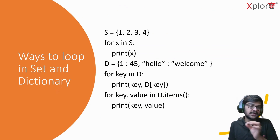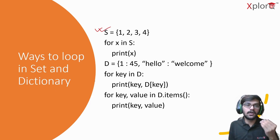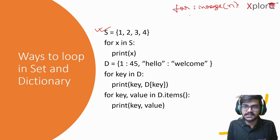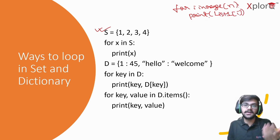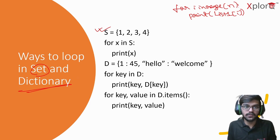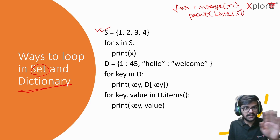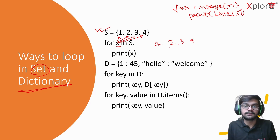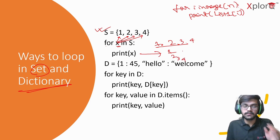Now let's look at ways to loop through sets and dictionaries. For a list or tuple we typically use 'for i in range(n)'. For a set like {1, 2, 3, 4}, you can iterate directly: 'for x in set: print(x)' — this prints each element one by one. Note that the output won't have commas; each element prints on a separate line.